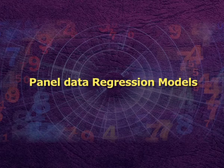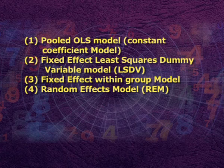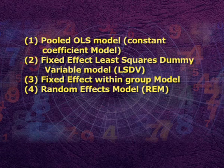Let us understand panel data regression models. Very broadly, we can classify the regression models for panel data into four categories. Number one, pooled OLS model, that is the constant coefficient model. Number two, fixed effect least squares dummy variable model, known as LSDV. Number three, fixed effect within group model. Number four, random effect models, known as REM.